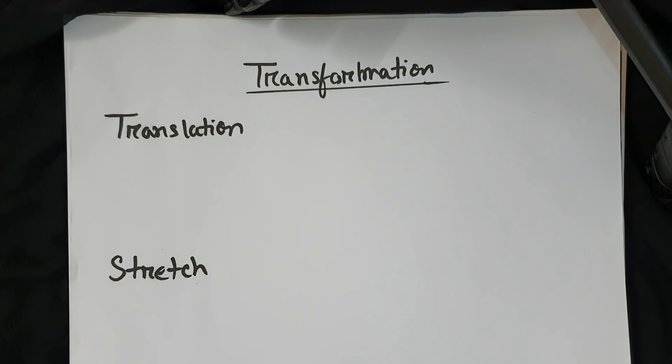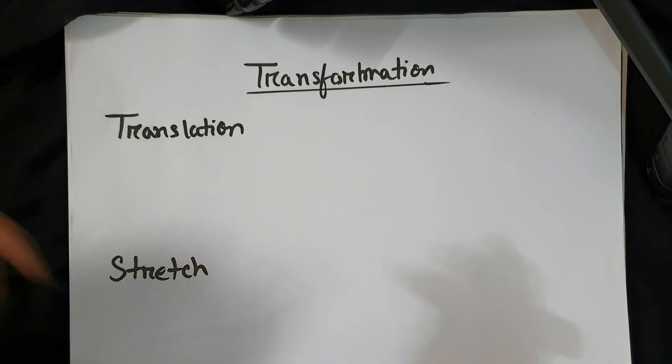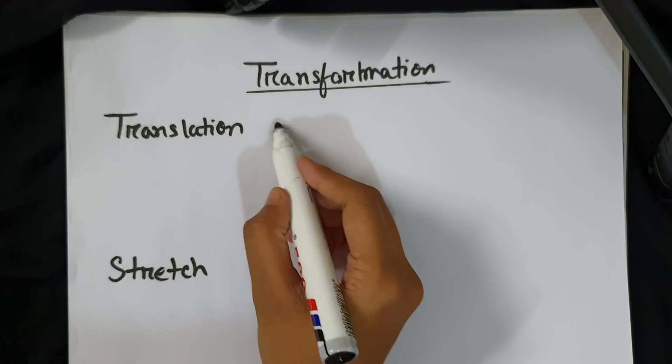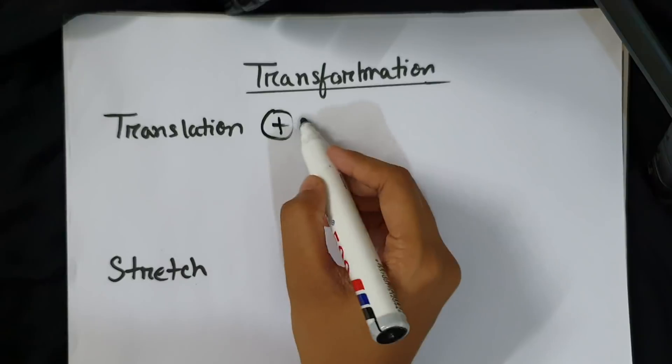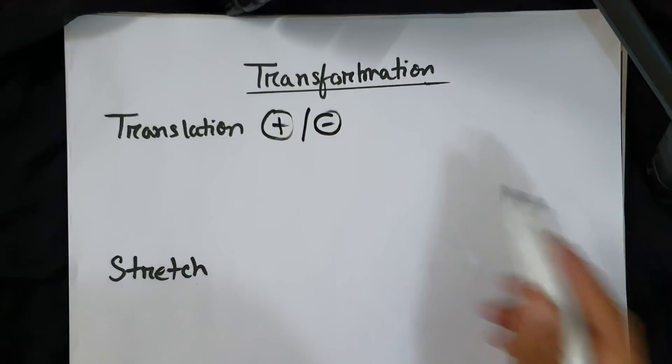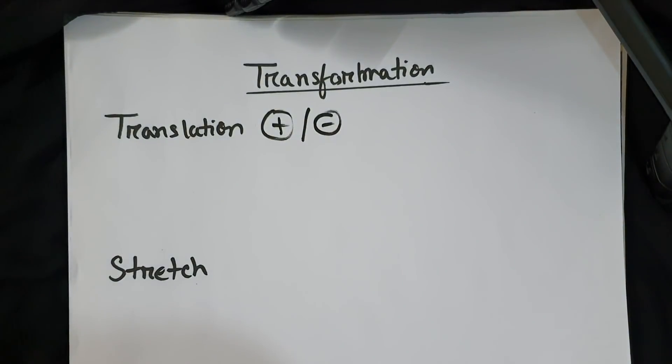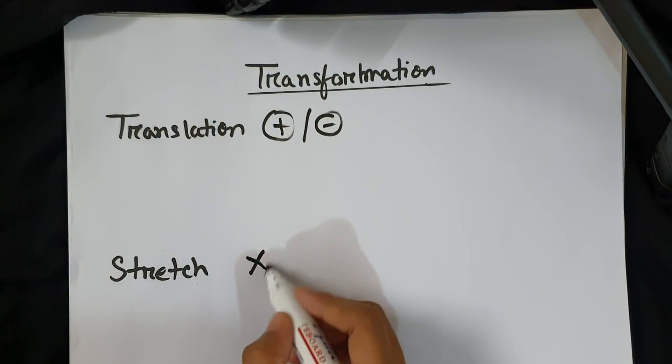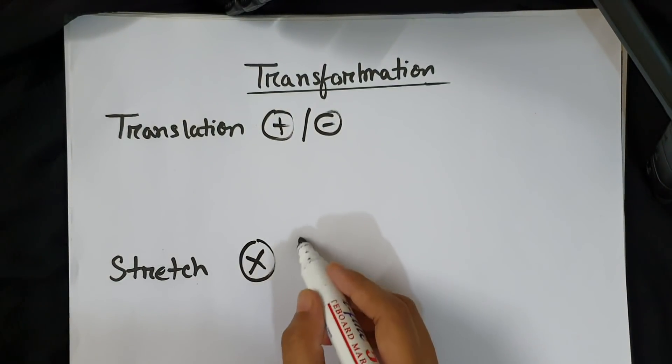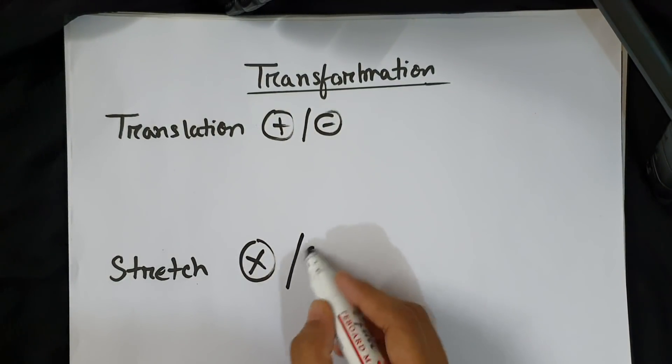This is graph transformation. There are two changes: translation and stretch. Translation is all about addition and subtraction, whereas stretch is multiplication or division.